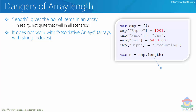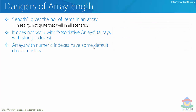First of all, array.length does not work properly with associative arrays. For example, if we have an associative array with four elements stored in four different string indexes, when we check emp.length we would expect four — because we have four memory allocations. But in fact it gives zero. Whenever you use associative arrays, string index allocations are not counted by dot length.